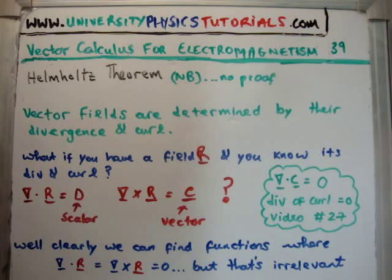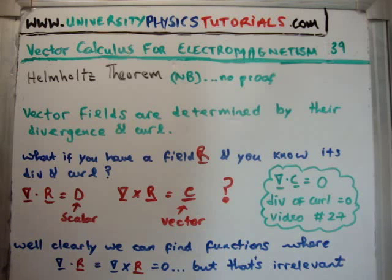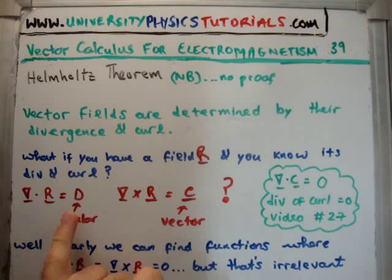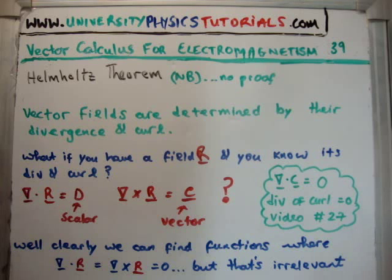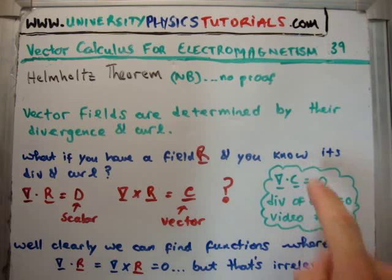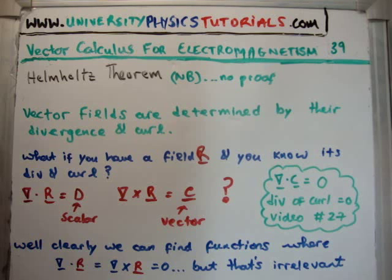If we have a vector field R and we know its divergence and curl: let's say the divergence of R gives a scalar D, and the curl of R gives a vector C. It's important to note that D is a scalar and C is a vector. For consistency, we know from video number 27 that the divergence of the curl is zero, so the divergence of C must be zero.